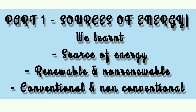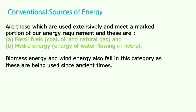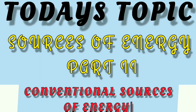In our previous video, we learnt about what is a source of energy, what is a renewable source and what is a non-renewable source. We also learnt what is a conventional source of energy and what is a non-conventional source of energy. Now for a quick recap: conventional sources of energy are those which are used extensively and meet a marked portion of our energy requirement. These include fossil fuels, hydro energy, biomass energy and wind energy. Today's discussion will be focused mainly on conventional sources of energy.